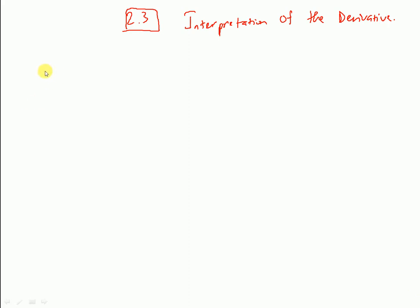In this section we're going to discuss more about different types of interpretation of the derivative. First, before we discuss further, remember from section 2.2 we call a function f of x, and when we want to take the derivative of this function we write that as f prime of x.